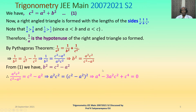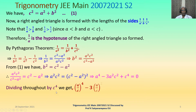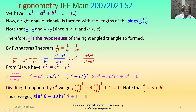Simplifying a²c² = (c² − a²)² gives a⁴ − 3a²c² + c⁴ = 0. We want sin theta, and sin theta = a/c. Dividing throughout by c⁴ gives (a/c)⁴ − 3(a/c)² + 1 = 0. Since sin theta = a/c, this equation becomes sin⁴θ − 3sin²θ + 1 = 0, an equation in sin theta.